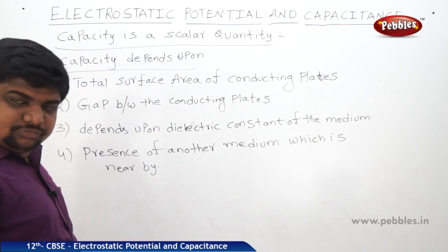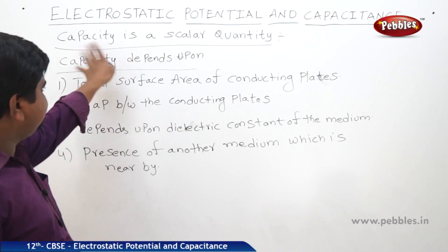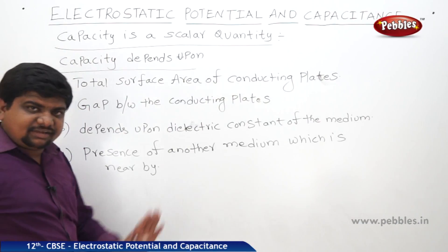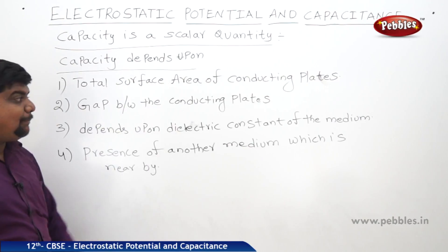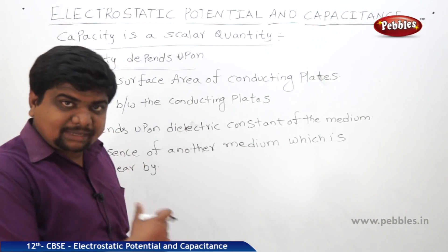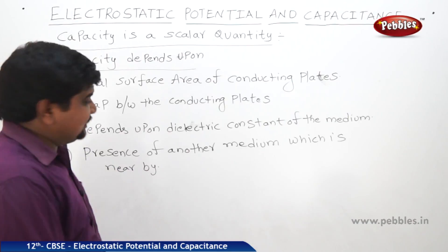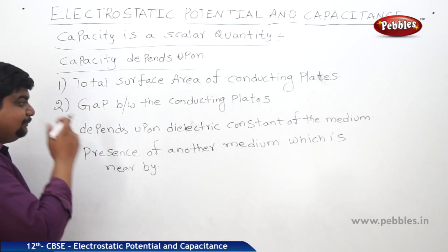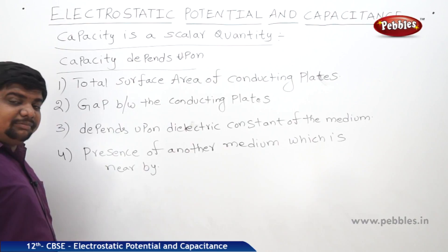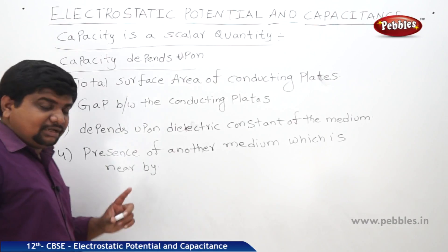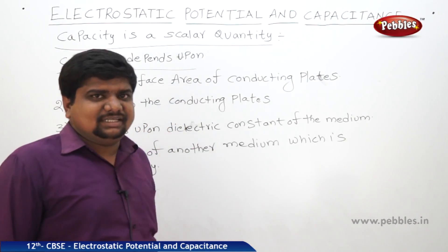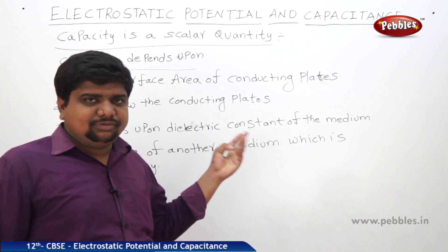So these are the four things upon which capacitance depends: first, total surface area of the conducting plates; second, the gap between the conducting plates; third, the dielectric constant of the medium; and fourth, the presence of another conductor or medium nearby. There are also some factors which are independent of capacitance, which we will now see.